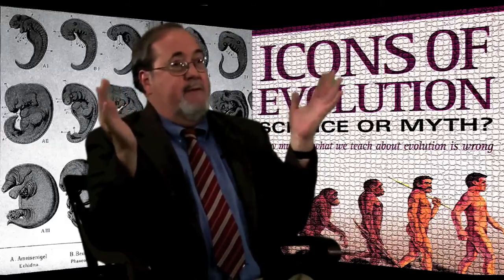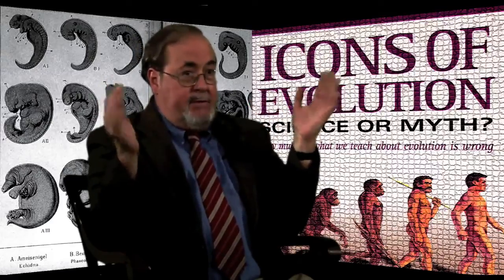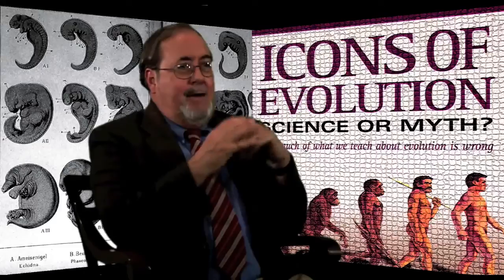The other thing wrong with Haeckel's drawings is that he selected very carefully. He has eight rows in his classic drawing, four of them are mammals, but he excluded various vertebrates that don't fit the pattern. For example, he doesn't have sharks, he doesn't have lampreys or eels which are very different, he uses a salamander instead of a frog because a frog doesn't look like that at all. Among the mammals he leaves out the platypus and the kangaroo, and only includes mammals that happen to look very similar. We call it cherry picking — he cherry picked the embryos he chose to show and then distorted them to make them look more similar than they really are.